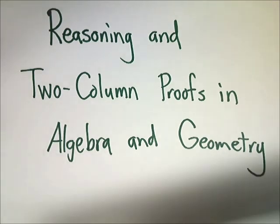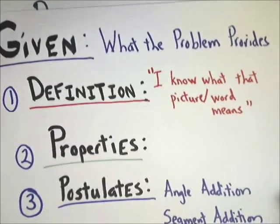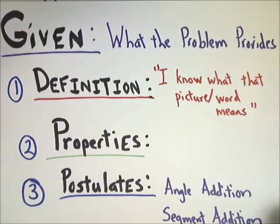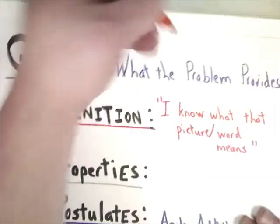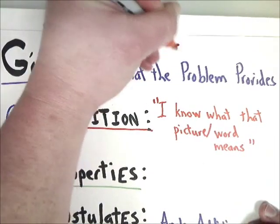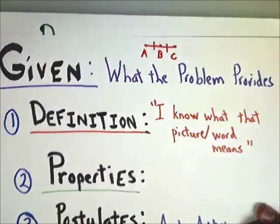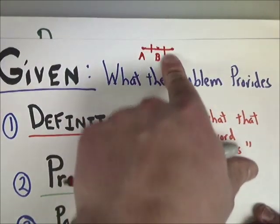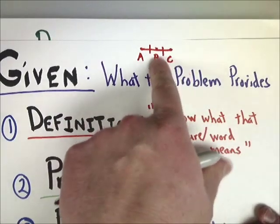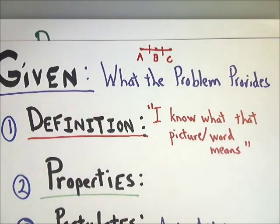When you have a proof, there's usually something called a given. That given is whatever the problem provides - it may tell you that one angle is equal to another angle. In my sample midpoint problem, the given might already tell me that AB and BC are the same, or that B is the midpoint. From there, I have to explain how I find the value of something.